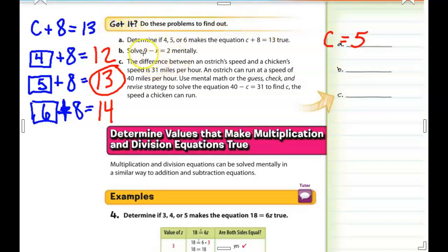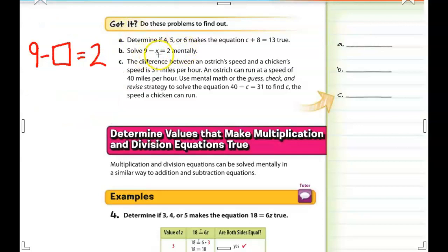So for B, it says solve 9 minus X equals 2 mentally. In this case, X is a variable. It's an unknown number. So 9 minus something that we don't know right now is equal to 2. So ask yourself, what would we subtract from the number 9 to equal the number 2? And you can also think backwards and count up on your fingers if you'd like. If you start out with 2 fingers, how many more fingers would you have to add in order to get to the number 9? Go ahead and answer that for me. Of course, the answer is 7. 9 minus 7 equals 2. So X is equal to 7.